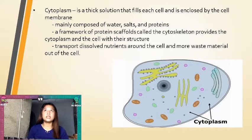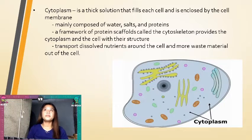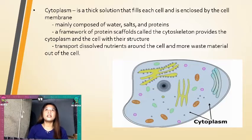Cytoplasm is a thick solution that fills each cell and is enclosed by the cell membrane, mainly composed of water, salt, and proteins. A framework of protein scaffold called the cytoskeleton provides the cytoplasm and the cell with their structure. It also transfers salt and nutrients around the cell and moves waste material out of the cell.